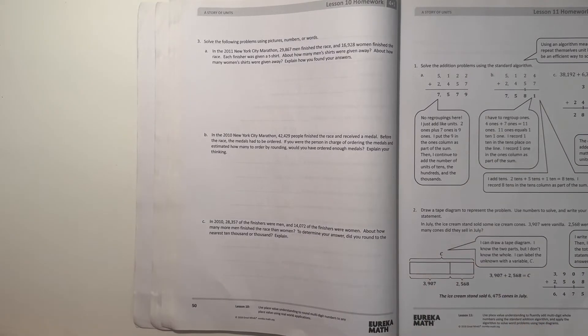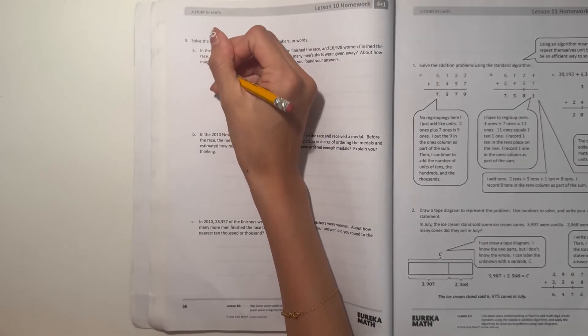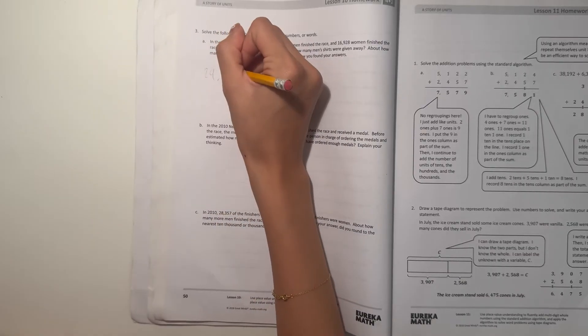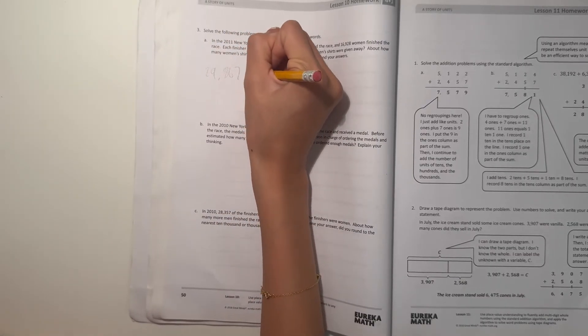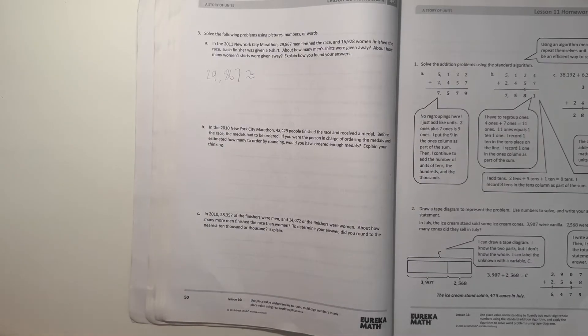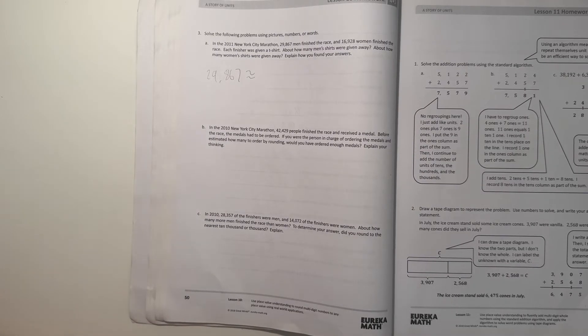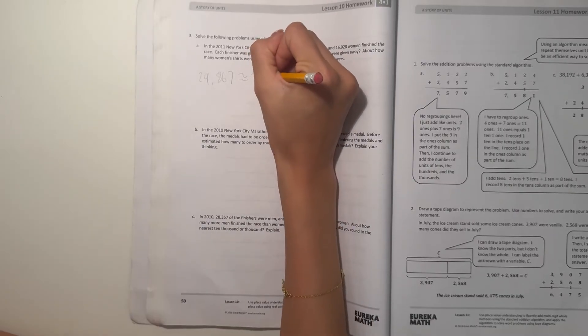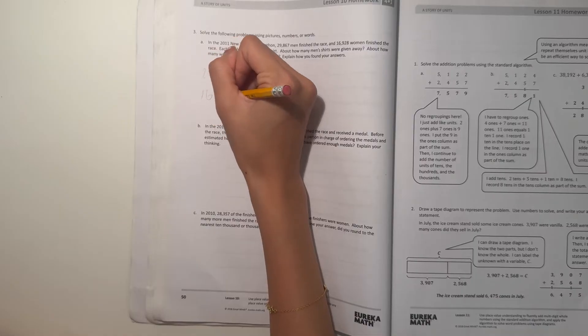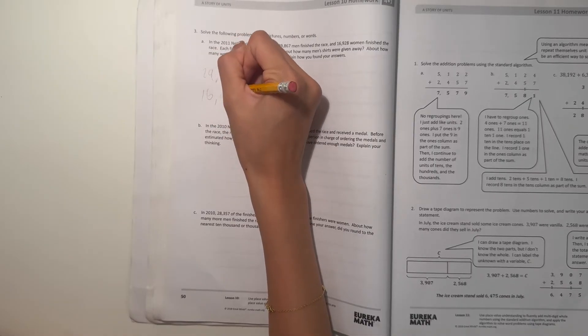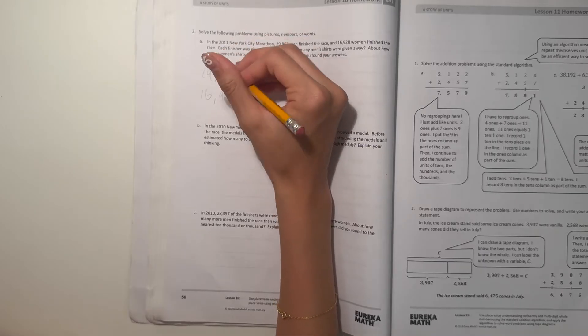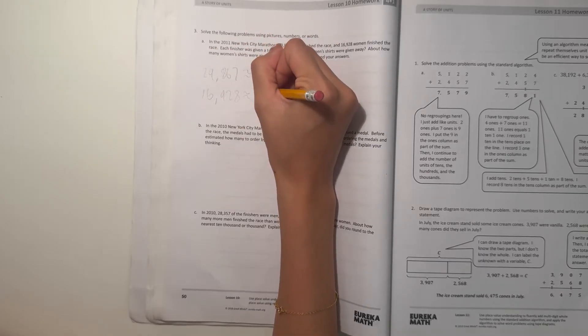All right so let's round our answers. So for the men they have 29,867 and if we want to round by 10,000 that would round to 30,000. And for women 16,928 would round to 20,000.